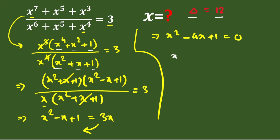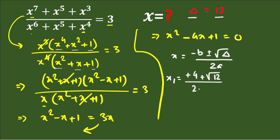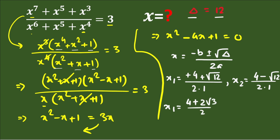We calculate x using the quadratic formula: x = (−b ± √D) / 2a. This gives two values. The first value: x₁ = (4 + √12) / 2 = (4 + 2√3) / 2 = 2 + √3. The second value: x₂ = (4 − √12) / 2 = (4 − 2√3) / 2 = 2 − √3.